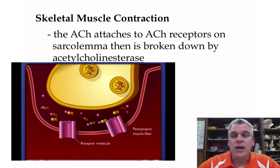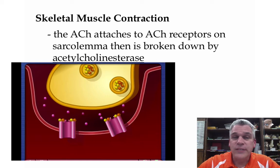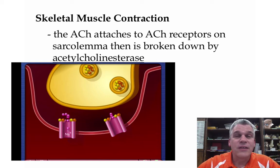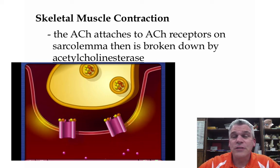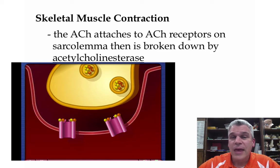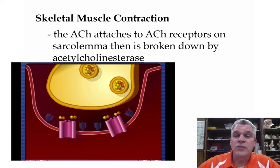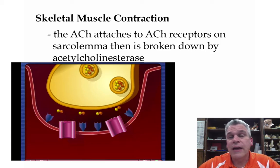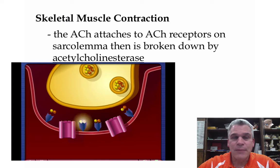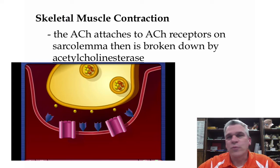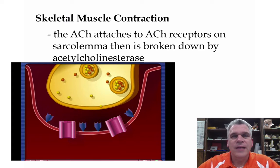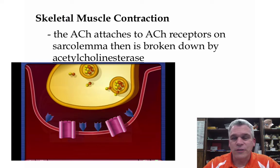The acetylcholine will attach to acetylcholine receptors on the sarcolemma, and it is then going to cause the impulse to continue down the muscle fiber. That acetylcholine is then going to be broken down by an enzyme called acetylcholinesterase — some of it will be reabsorbed and some will just be destroyed.